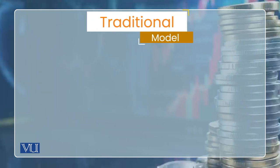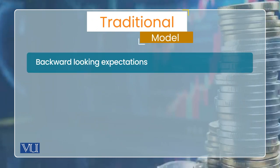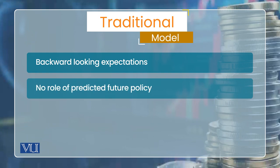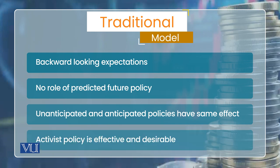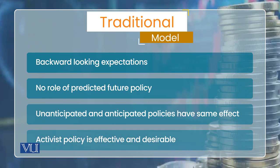پہلا model ہمارا traditional model تھا جس میں expansionary policy ہو تو output بڑھ جائے گی اور contractionary policy ہو تو output کم ہو جائے گی۔ Stabilization کا مطلب یہ ہے کہ اگر کوئی shock economy کو hit کرتا ہے اور وہ expansionary ہے تو monetary policy contractionary بنائیں گے، اور اگر shock contractionary ہے تو monetary policy expansionary بنائیں گے تاکہ output اپنے natural rate سے زیادہ deviate نہ کرے۔